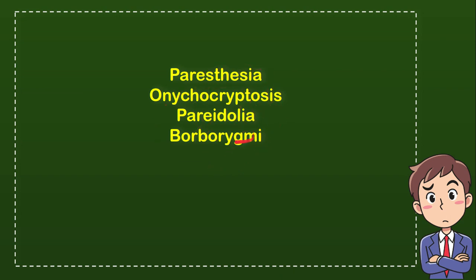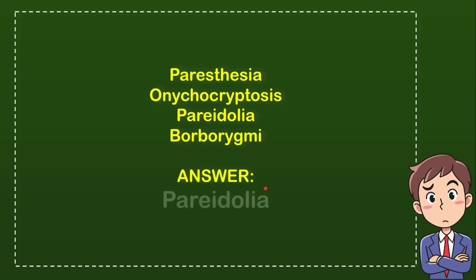The correct answer for the question is pareidolia. So that is the answer — pareidolia is the tendency to see shapes in random patterns.